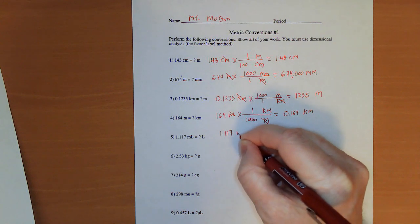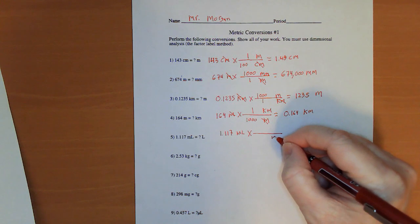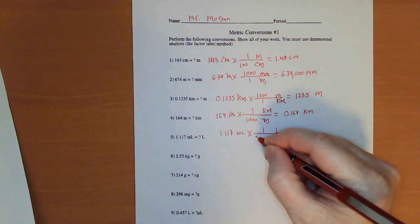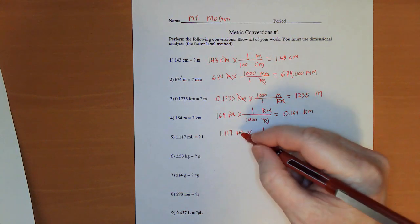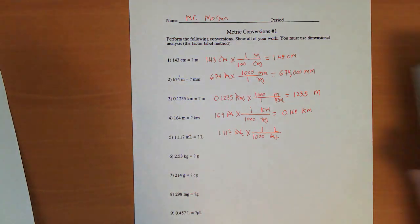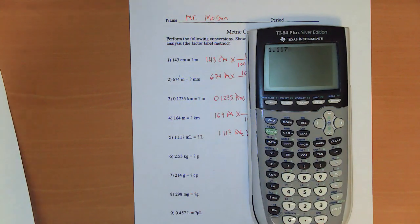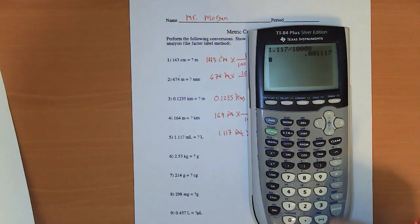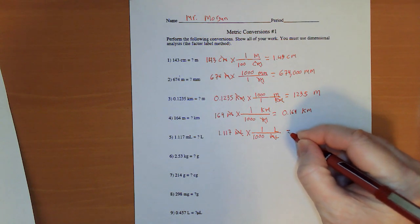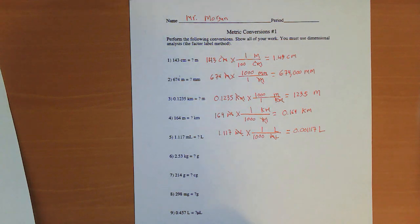1.117 milliliters times. I want milliliters to cancel. I want to get to liters, so liters is going to be on the top. One liter has 1,000 milliliters. The millis cancel. So, let's do it a different way. If you're not comfortable, you can always let a calculator do the work for you. And you get 0.001117 liters.